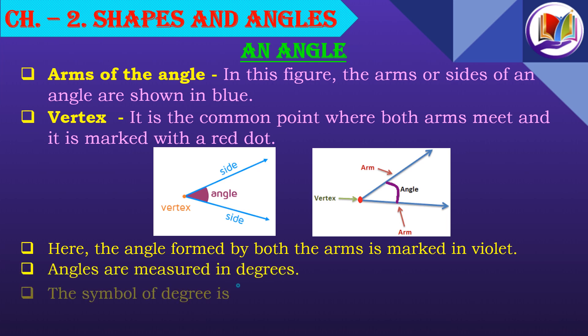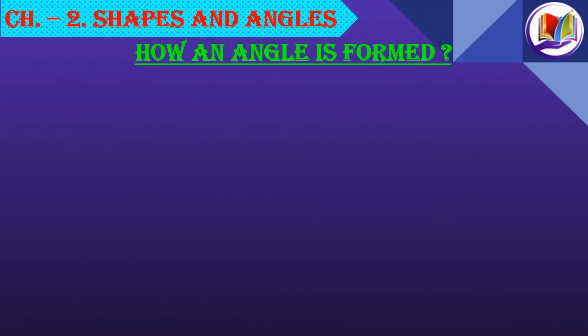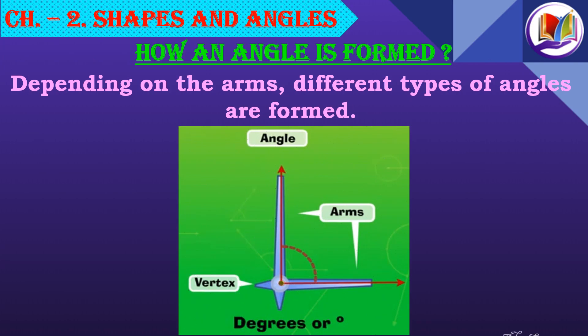Angles are measured in degrees, which is represented as a small circle on the right of the number — for example, 45 degrees. Depending on the arms, different types of angles are formed. Here is an example showing formation of an angle where both arms meet at the point known as vertex, and angles are measured in degrees. Now let's go ahead and learn about different types of angles.